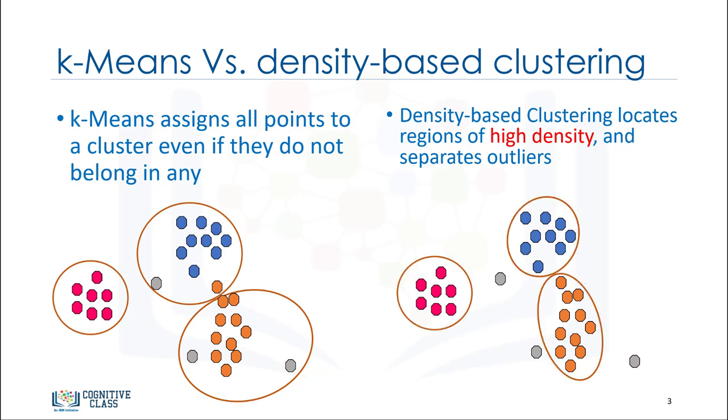In contrast, density-based clustering locates regions of high density that are separated from one another by regions of low density. Density in this context is defined as the number of points within a specified radius. A specific and very popular type of density-based clustering is DBSCAN.